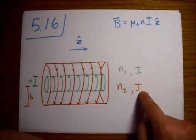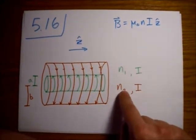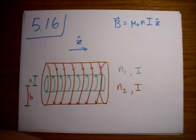They both have the same current but they do have different turns per unit length, so sort of a density of how many times the wire is wrapped around them.